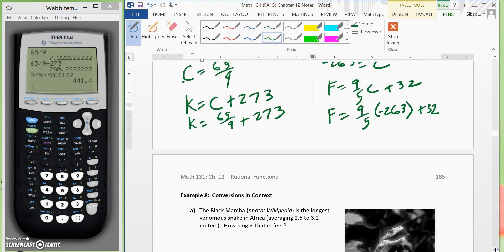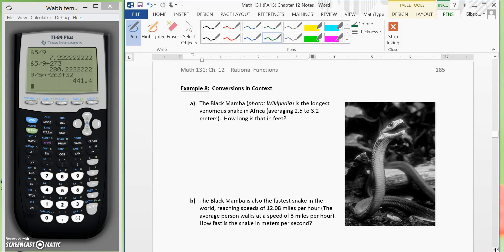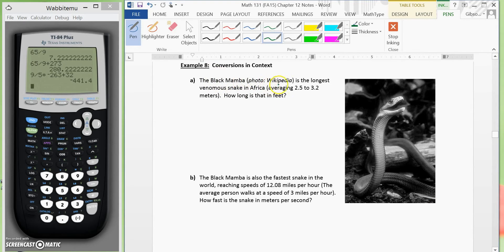Now, let's go on to the next page. It says Black Mamba Photo Wikipedia is the longest venomous snake in Africa, averaging 2.5 to 3.2 meters. How long is that in feet? So what we need to do, we're actually going to get two answers. We're going to take 2.5 meters and change it to feet, and also take 3.2 meters and change it to feet. And we'll round to one decimal place.